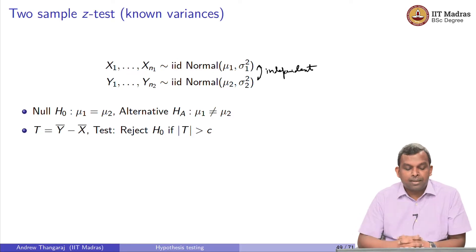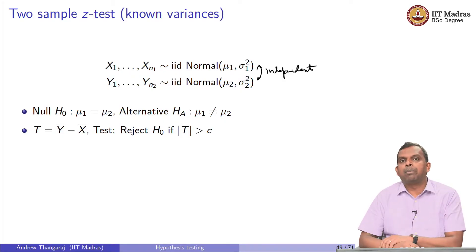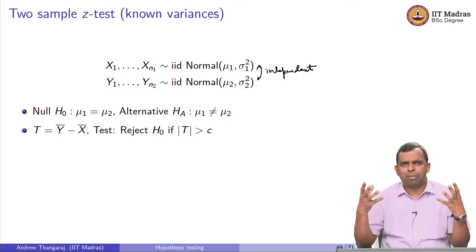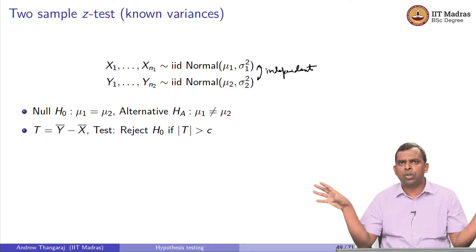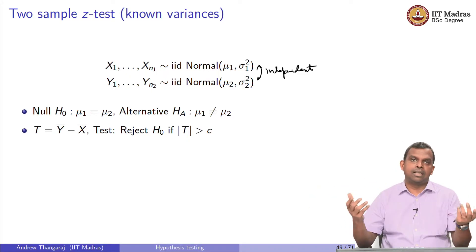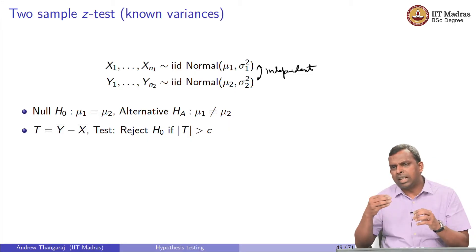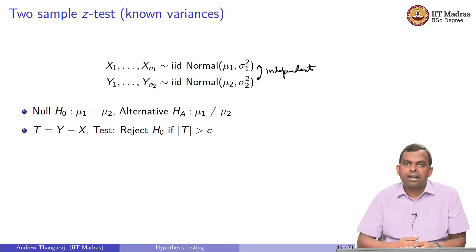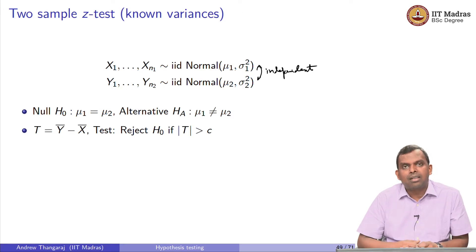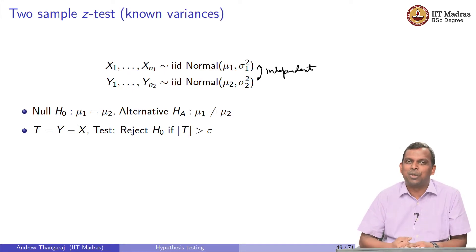These are the two samples and my null hypothesis is mu 1 equals mu 2 — both samples have the same mean. For example, we are measuring IQ of two different groups of people; the null hypothesis is that the average IQ is the same. The alternative is they are not the same. You may also want an alternative like mu 1 greater than mu 2. Let us start with mu 1 not equal to mu 2.